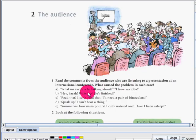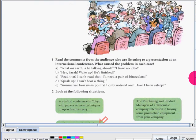What caused the problem in each case? Let's say letter A: What on earth is he talking about? I have no idea. B: Hey Sarah, wake up, he's finished. C: Read that? I can't read that. I need a pair of binoculars. D: Speak up, I can't hear a thing. E: Summarize four main points? I only noticed one. Have I been asleep?